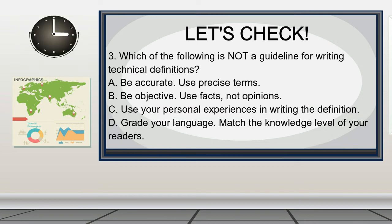Question 3: Which of the following is NOT a guideline for writing technical definitions? A. Be accurate — use precise terms. B. Be objective — use facts, not opinions. C. Use your personal experiences in writing the definition. D. Grade your language — match the knowledge level of your readers.